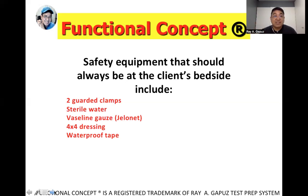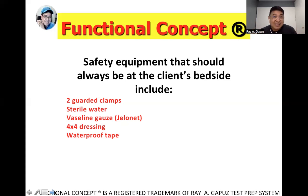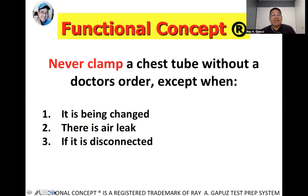If the patient is being transported, for example to the X-ray laboratory, and they accidentally pull out the chest tube, the most appropriate action to preserve negative pressure within the thoracic cavity is to cover the wound with any material available.